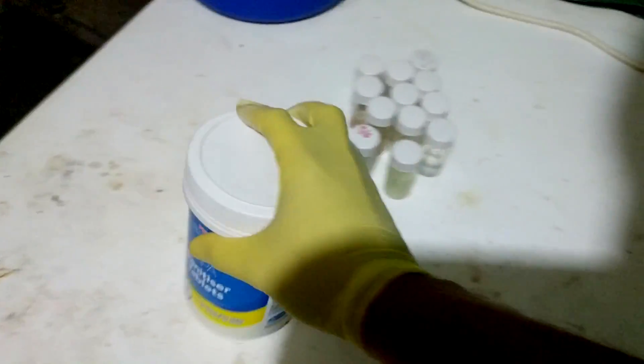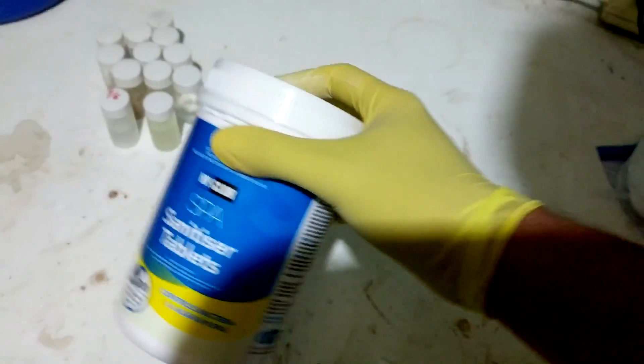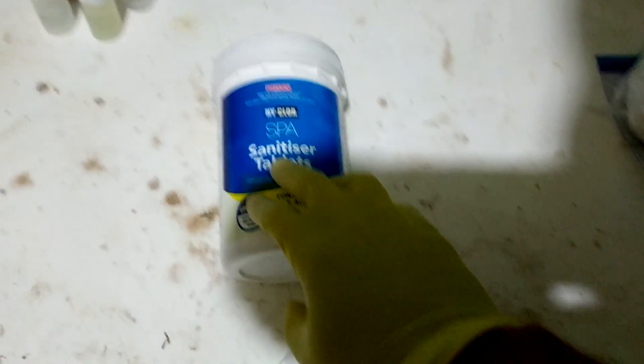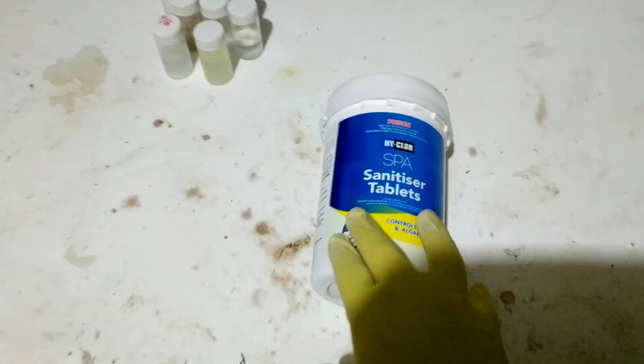So the chemical we're going to be using is this chemical I bought from Bunnings earlier today. So this is the only sort of bromine chemical that is actually used in Australia.